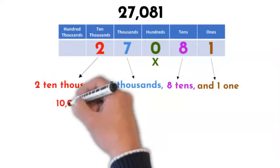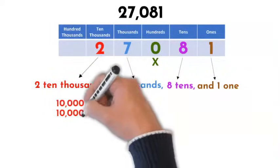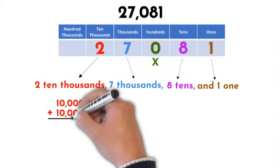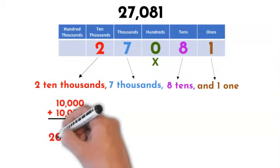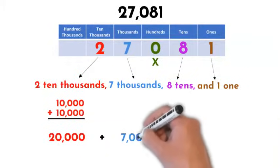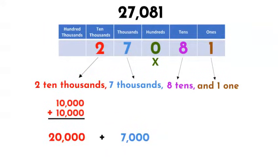Now, let's try to decompose our number into numeric values. We know we have 2 ten thousands. Therefore, we can add 10,000 plus 10,000 and we will have 20,000. Next, we now understand that 7 in the thousands place is the same as 7,000 so we will add this to our 20,000.